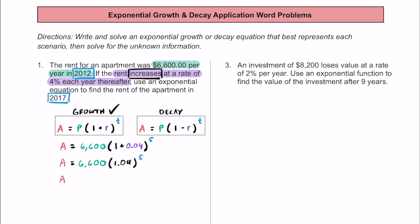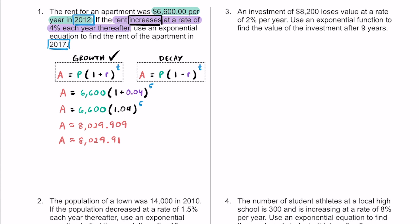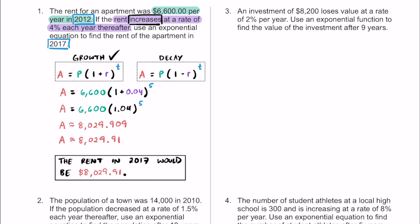The rent in 2017 is going to be approximately — we need to round to the nearest penny because we're dealing with money. I'm getting about $8,029, and looking at the thousandths place to round to the nearest penny, that 9 bumps the 0 up to a 1. So this is going to be $8,029.91. In conclusion, the rent in 2017 would be about $8,029.91.